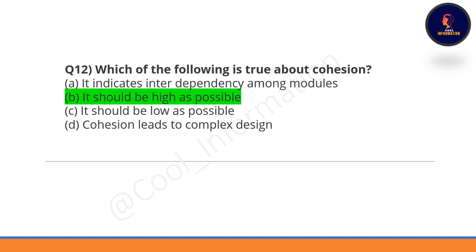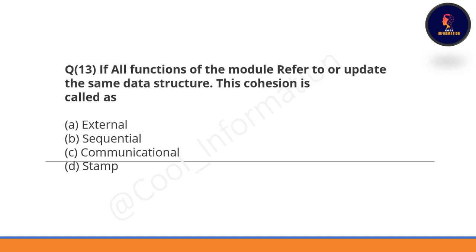Remember this important point: cohesion should be high and coupling should be low — high cohesion and low coupling. Question 13: If all functions of a module refer to or update the same data structure, this cohesion is called communicational cohesion — Option C is correct.